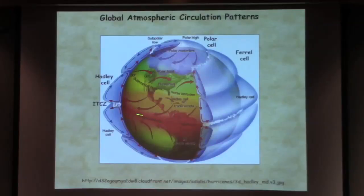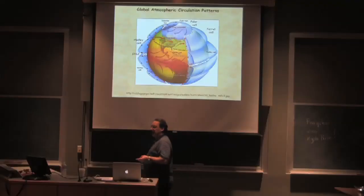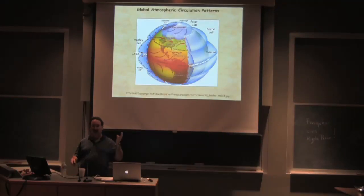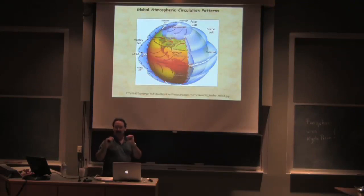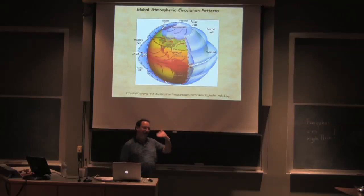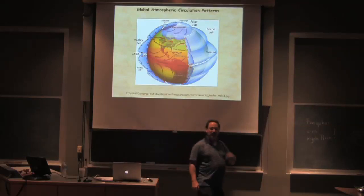If we look at the planet, here's the equator. We have three atmospheric circulation cells: between the equator and about 30 degrees latitude we have the Hadley cell; from 30 to 60, the Ferrel cell; and from 60 to 90, the polar cell. But those are not concentric circles at fixed latitudes — it's the jet streams that meander back and forth that form the boundaries between the Hadley cell and the Ferrel, and the Ferrel and the polar cell.